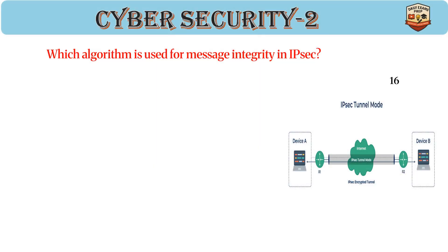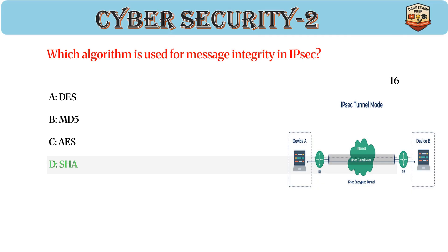Which algorithm is used for message integrity in IPSec? Answer: D. SHA. SHA ensures integrity in IPSec. SHA-1 and SHA-2 families are common. Protects against data modification.